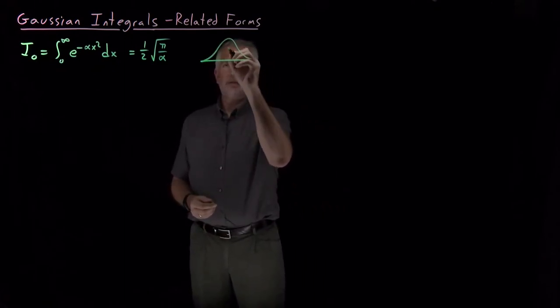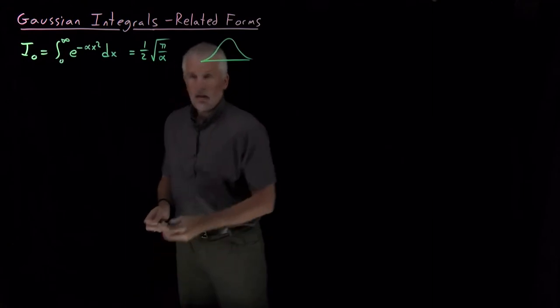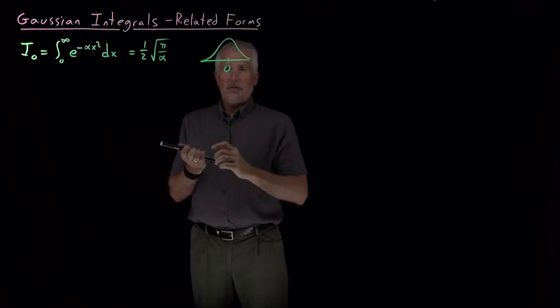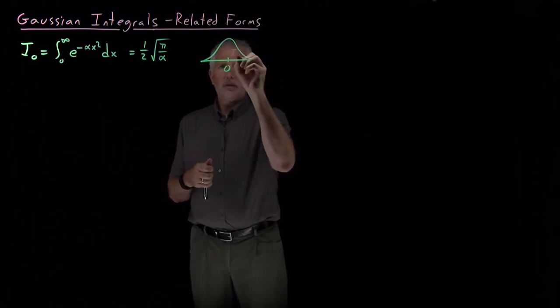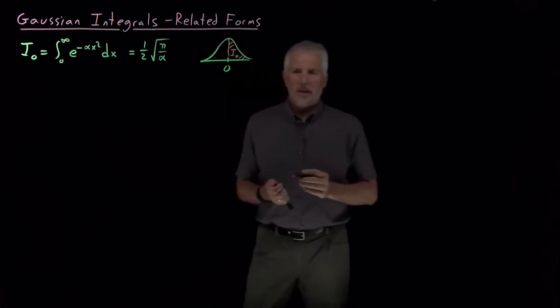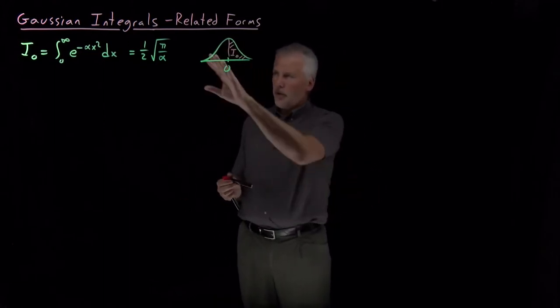If I have a Gaussian curve, the area under the right half of that curve or the left half of that curve is this quantity we're calling I₀. Even if we know that...